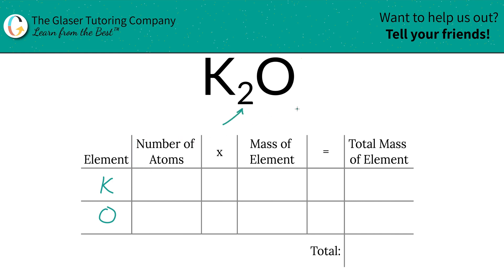Next then to identify the number of atoms, that's where the subscripts come into play. If you don't see a subscript for a particular element just put in a one. So there's two potassium, one oxygen.